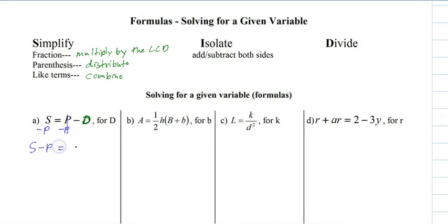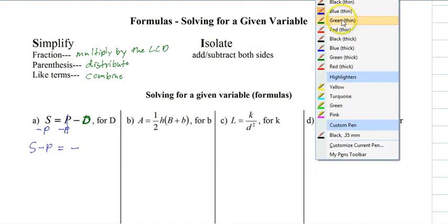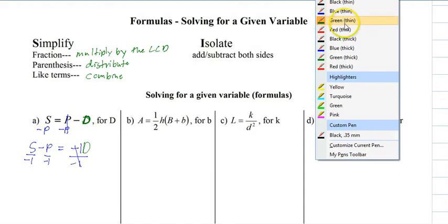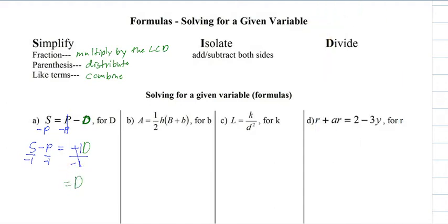So we have S minus P equals minus D. So it's still not finished. We want it just to be D, which means you go to the last step and divide. And remember, there's a 1 sitting there. So we divide by negative 1. And since it's a number, you want to divide each part by that negative 1. So now we have D equals negative S plus P. And that's it. That's all you're going to do, three steps.